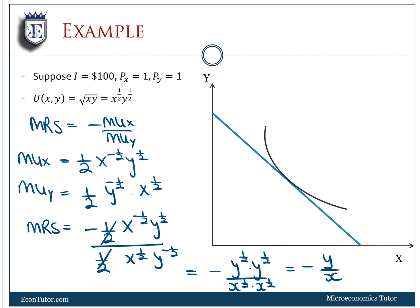So I set the negative Y over X equal to the price ratio, which is just negative one. So this cancels out, and Y equals X.